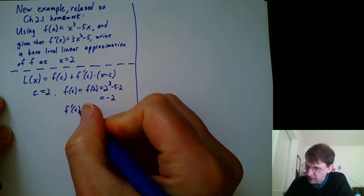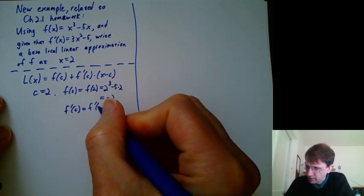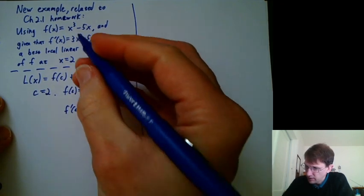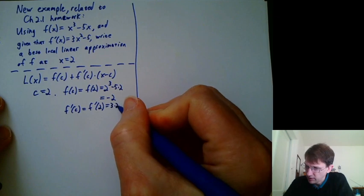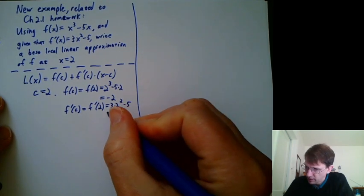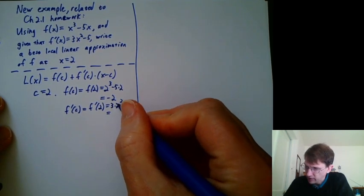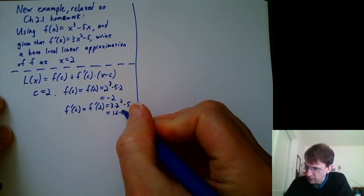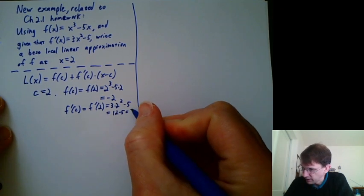f'(c) is f'(2), which is 3×2² - 5. 2² is 4, 3 times that is 12 - 5, which is 7.